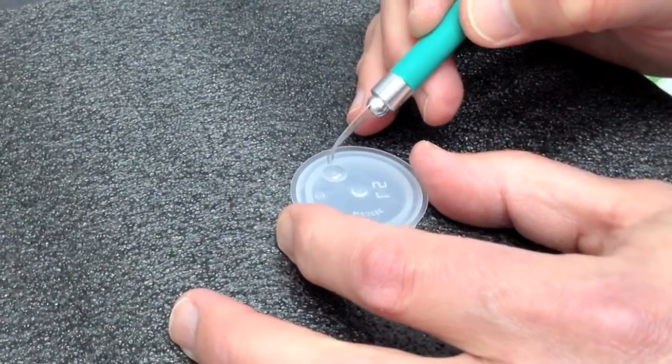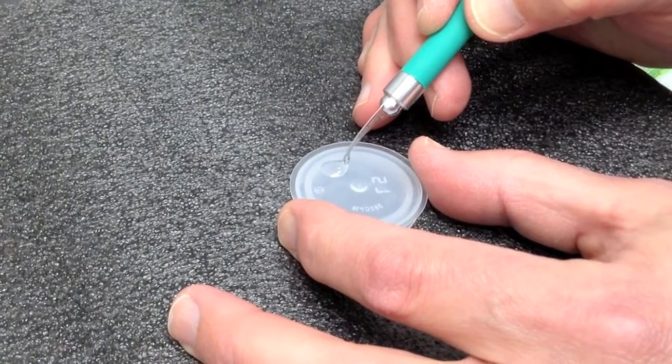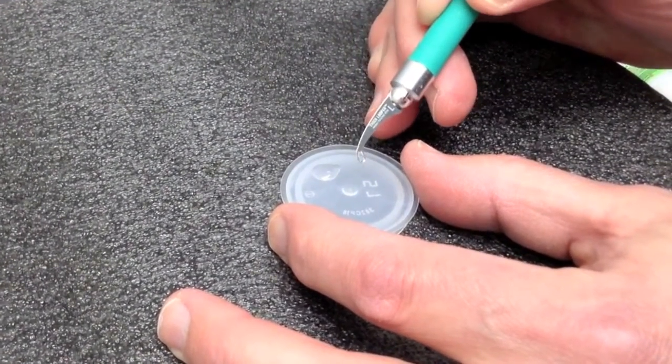And then you're going to take your looper, and you're going to pull it through the glue. And this is going to load the glue into the looper.